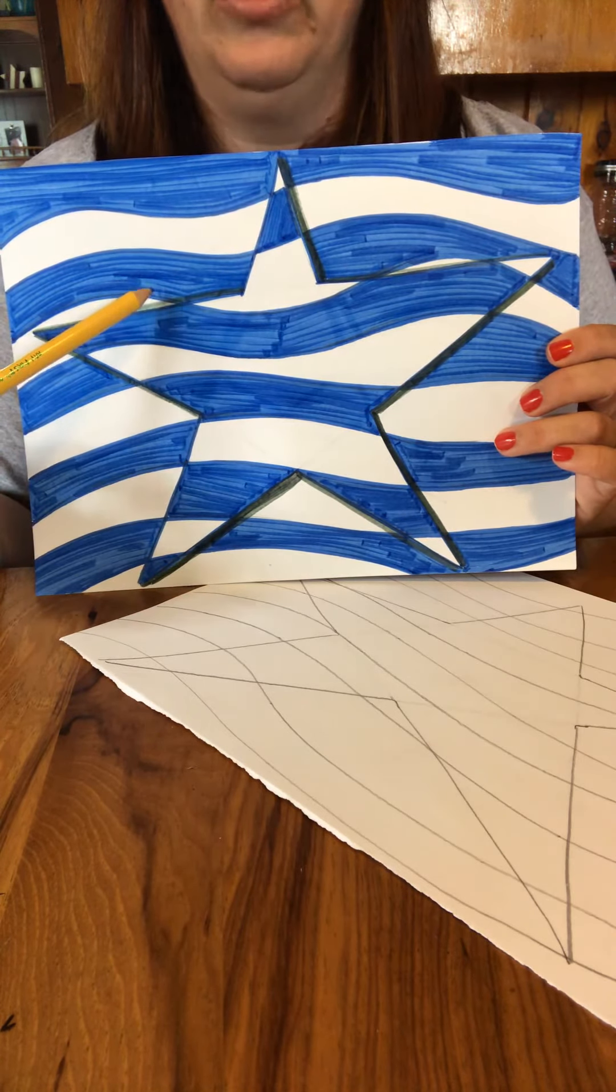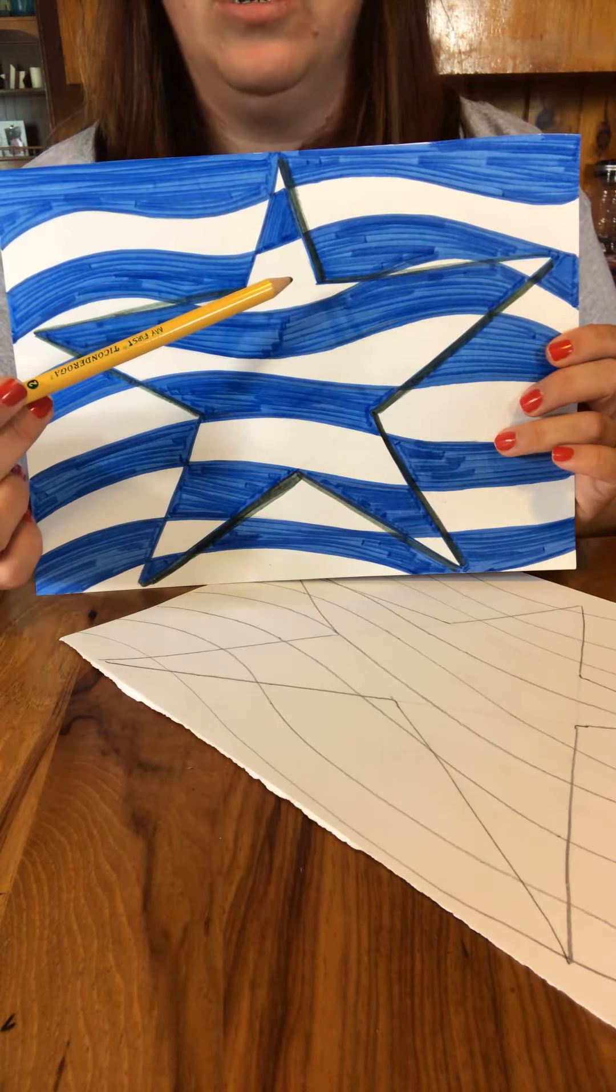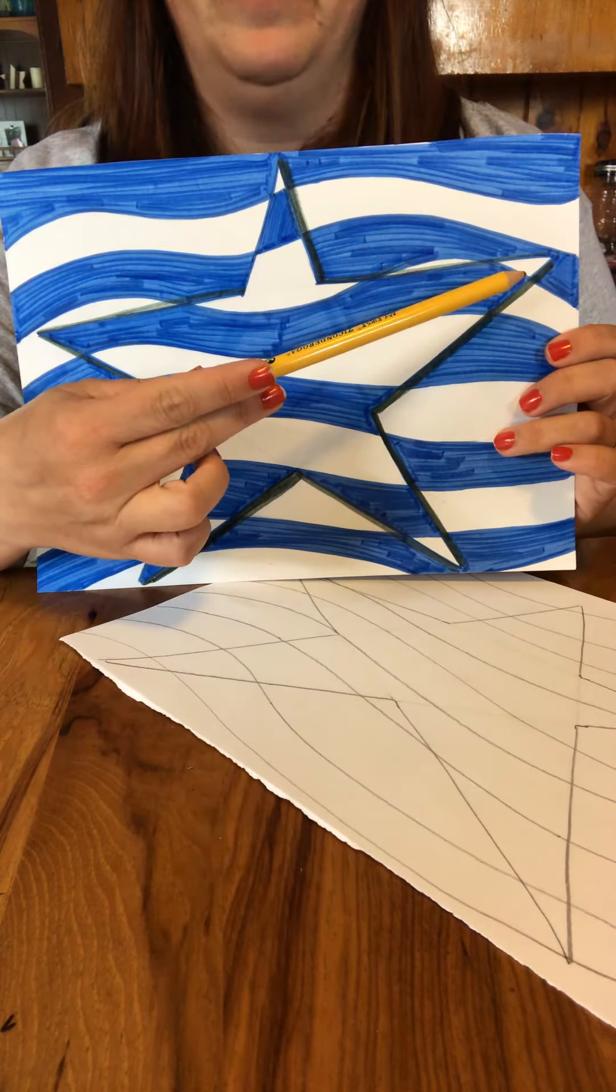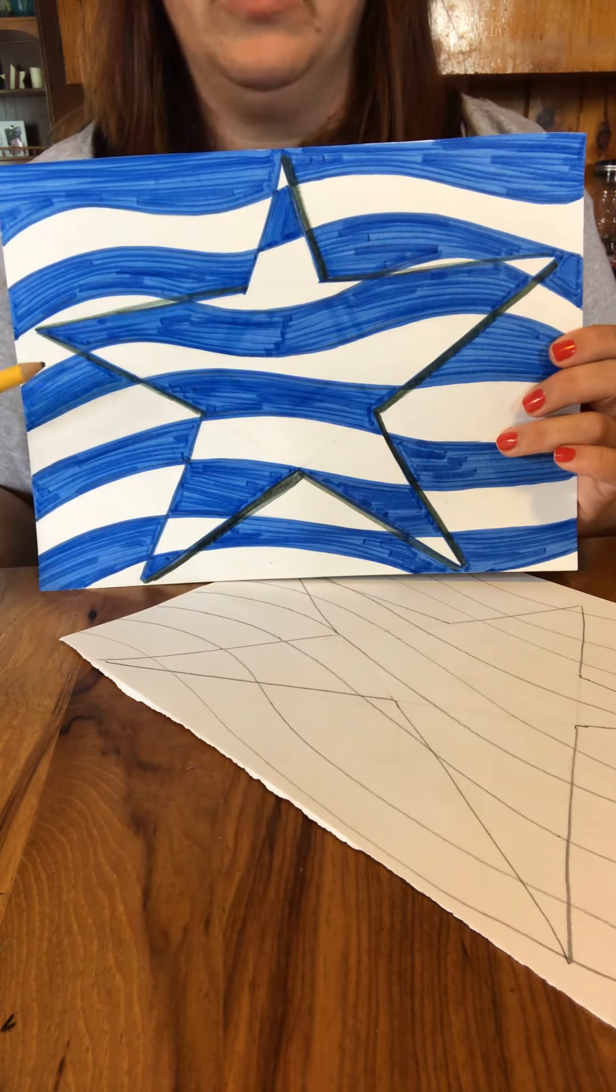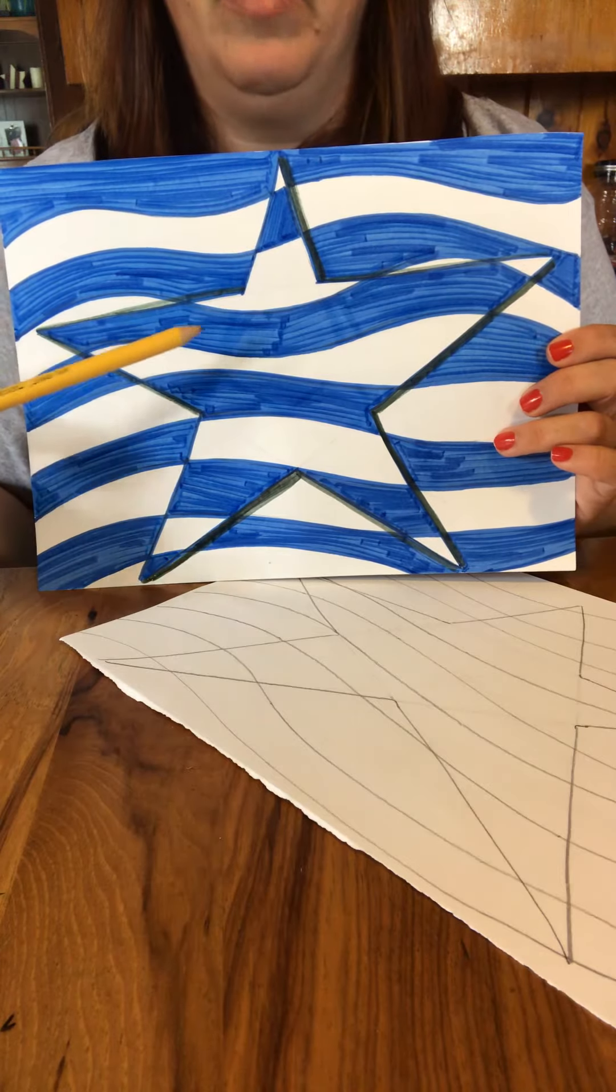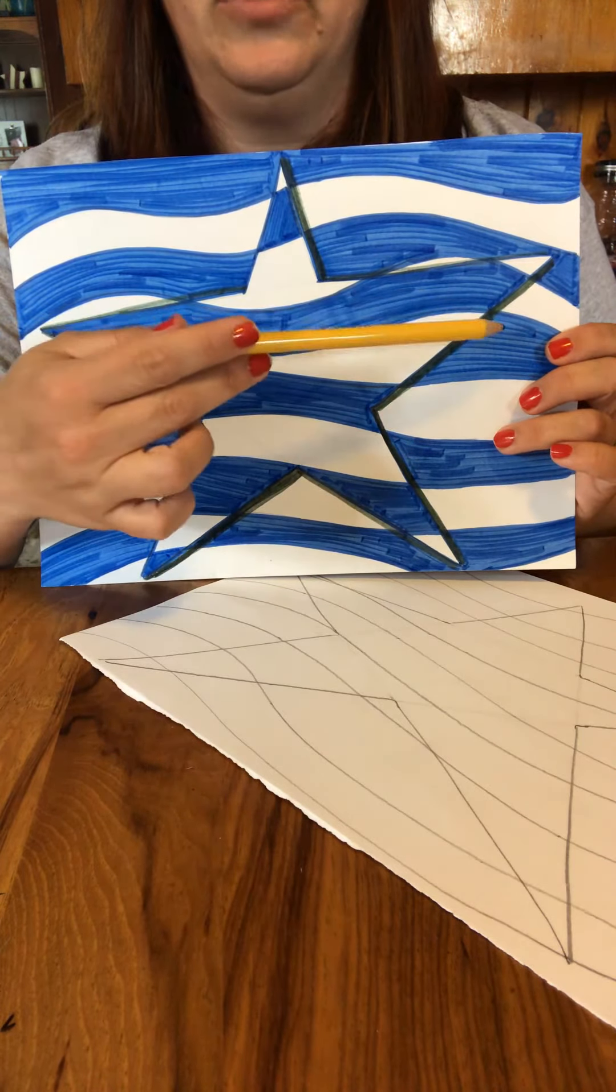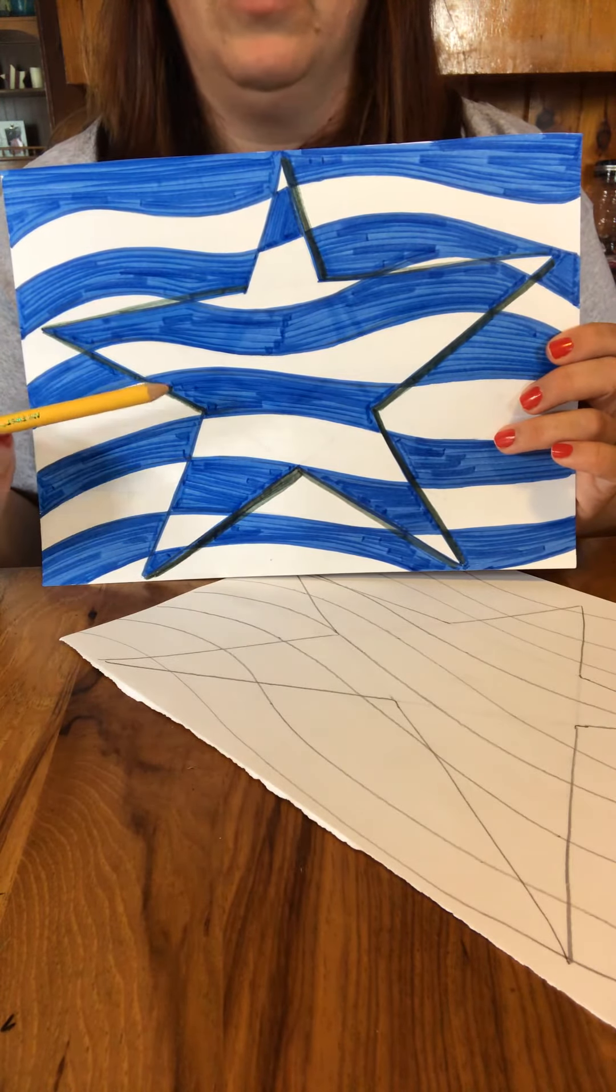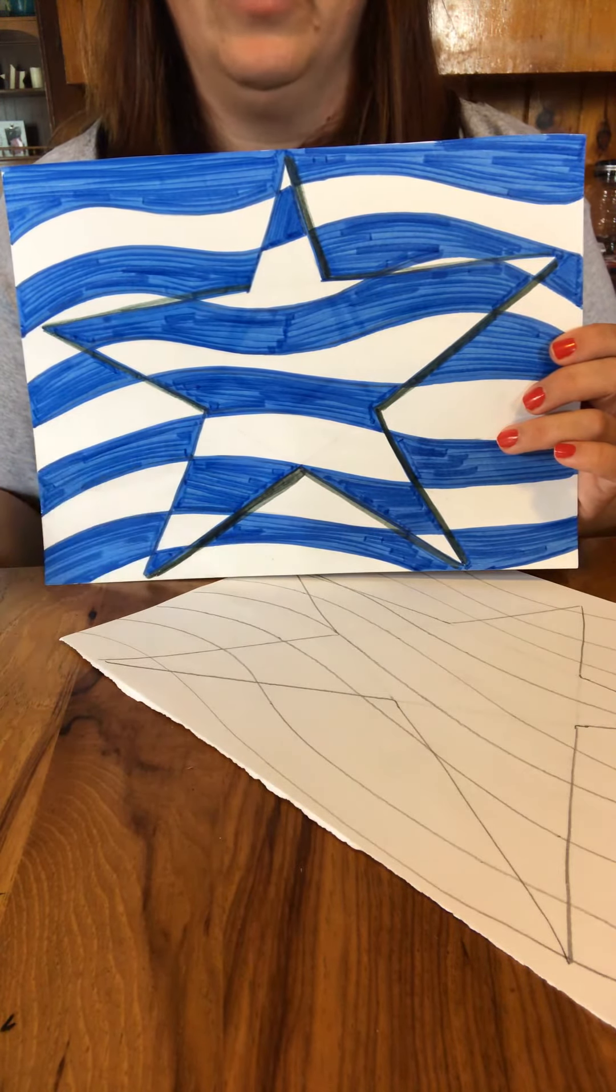Next stripe is blue but where it hits the star it's white. So it hits it here and over here. Next one is a white stripe but inside the star that stripe is blue. And you continue down all the way until you've colored the whole picture.